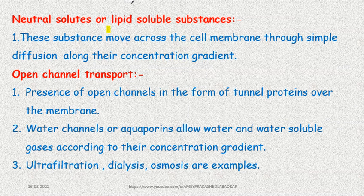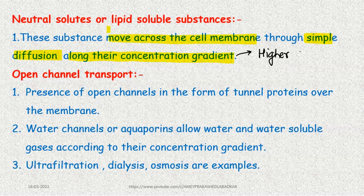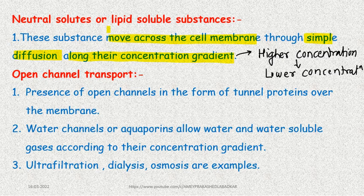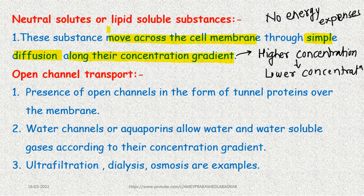Neutral solutes move across the cell membrane through simple diffusion along their concentration gradient — from a region of higher concentration to a region of lower concentration. Along the concentration gradient means no energy expenditure; no ATP molecule is required for transport — just like flowing with the current of water, no energy is needed. This applies to lipid-soluble substances.